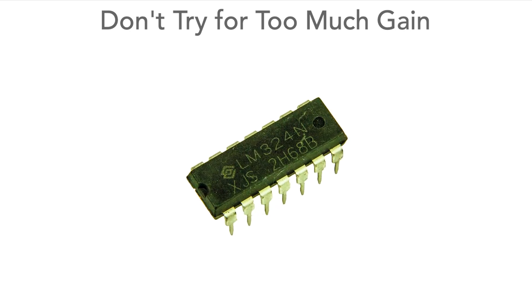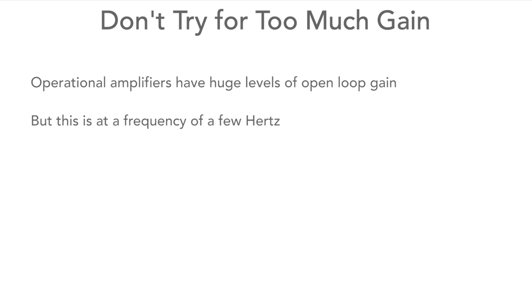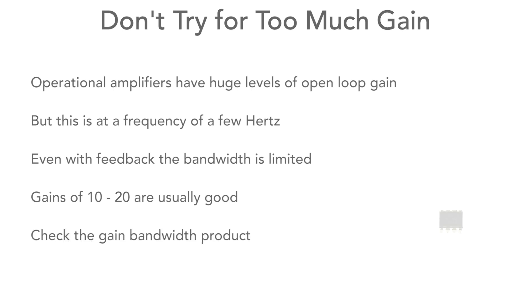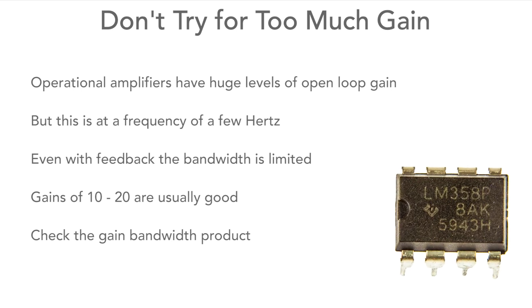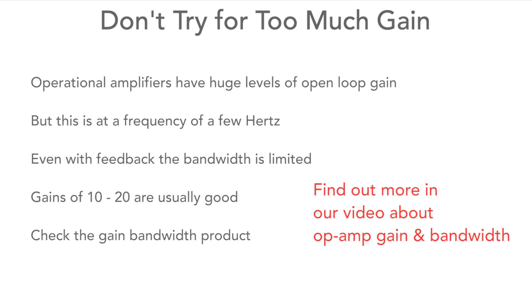Next, don't try to get too much gain out of an individual stage. Although op amps have a huge level of open loop gain, this is at a frequency of only a few hertz, so you need to keep the gains down. Final voltage gains of 10 or 20 are often good, but check the gain bandwidth product against the gain and bandwidth that you need, as this is very important for voltage feedback op amps.